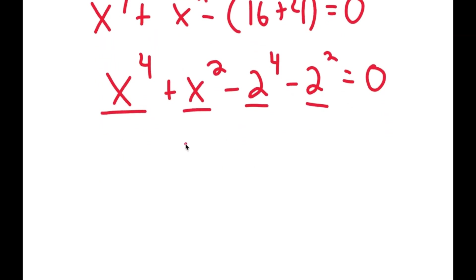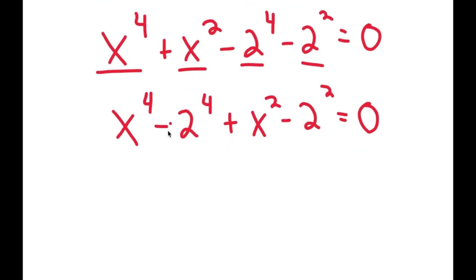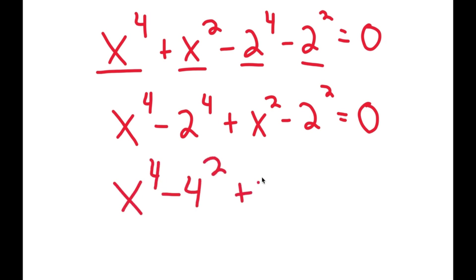Now I can put the powers of 4 together and the powers of 2 together. So I get x to the power of 4 minus 2 to the power of 4 plus x squared minus 2 squared is equal to 0. Now, 2 to the power of 4 is 16, and 16 is the same thing as 4 squared as well. So I get x to the power of 4 minus 4 squared, and I have this plus x squared minus 2 squared.